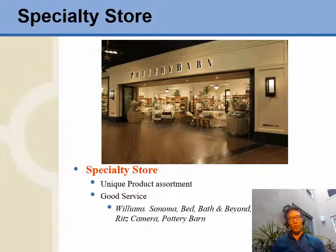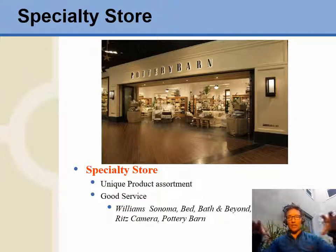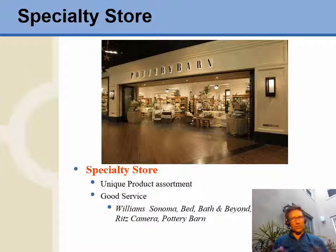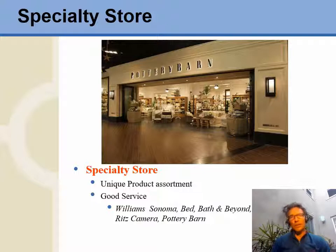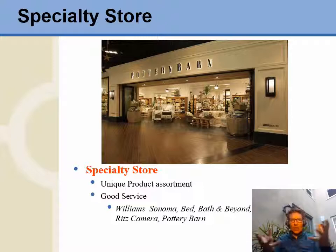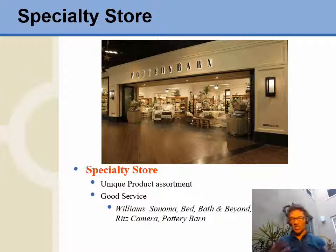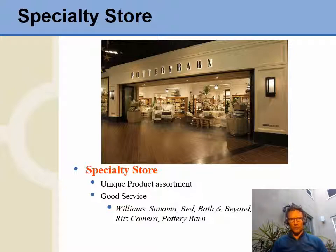We also have specialty stores. If you've gone to a mall lately, malls are typically anchored by large tenants at the ends — we call those anchor tenants — and those traditionally used to be department stores like Sears. Department stores have been struggling, so we're seeing different types of anchors; in some shopping centers the anchor might even be a Target or a category killer like Ikea. Within the malls, specialty stores have a perceived higher quality and better service on a specific line of products — like Pottery Barn for home furnishings, Victoria's Secret for women's lingerie, or Ritz Camera for all things cameras.